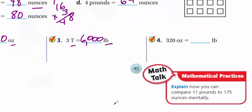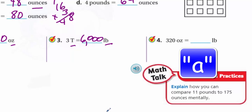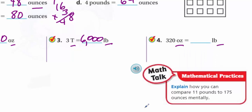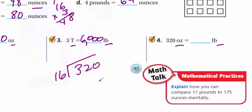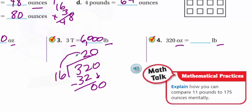Number four: 320 ounces equals how many pounds? I'm going from smaller to larger, so I divide. We divide 320 by 16, because there are 16 ounces in one pound. 16 goes into 32 twice, bring down the 0, goes in 0 times — so the answer is 20 pounds. We can double-check: 20 times 16 is 320. That's 20 pounds.